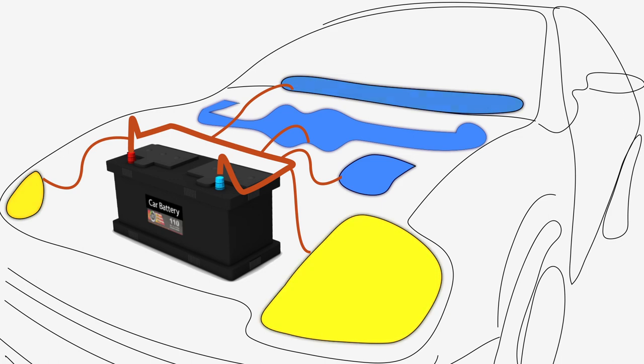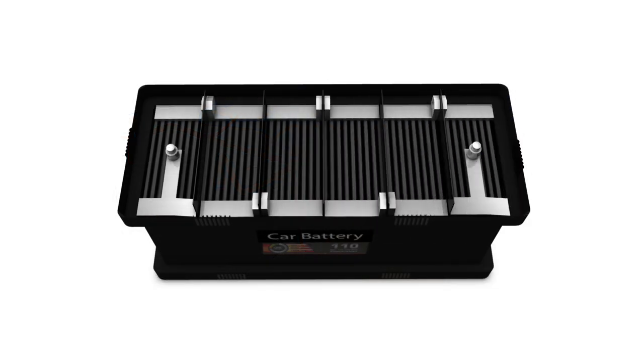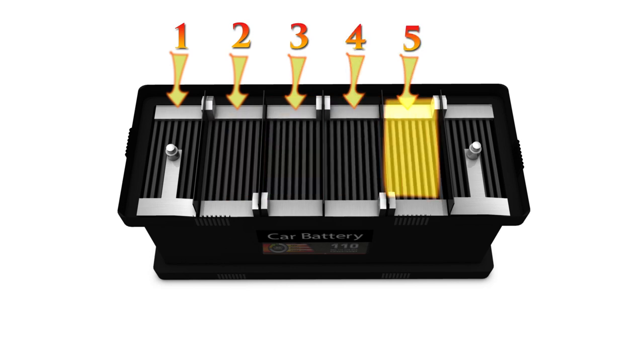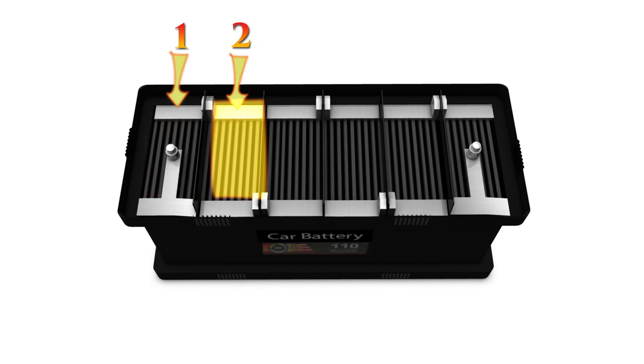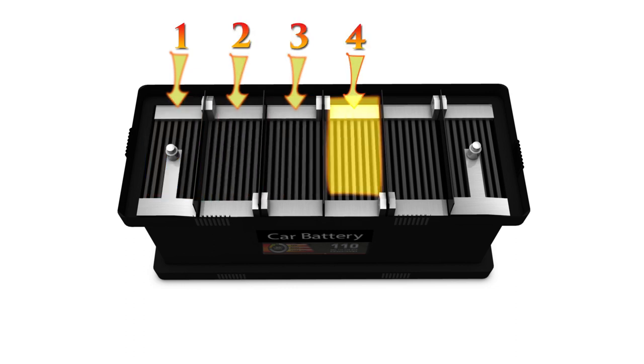It is a very important part of any car. Inside the car battery there are six separate compartments called cells. Each of these cells produces 2.1 volts of electricity, and when all six are linked inside the battery, they produce 12.6 volts in total.